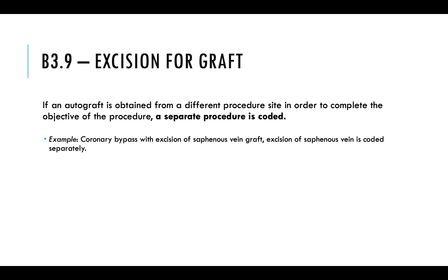Excision for graft: If an autograft is obtained from a different procedure site in order to complete the objective of the procedure, a separate procedure code is used. Grafts are used to take veins or arteries from different parts of the body and place them in the heart, or you can get skin grafts. It always has its own separate procedure code, even though it's done during the same procedural period.